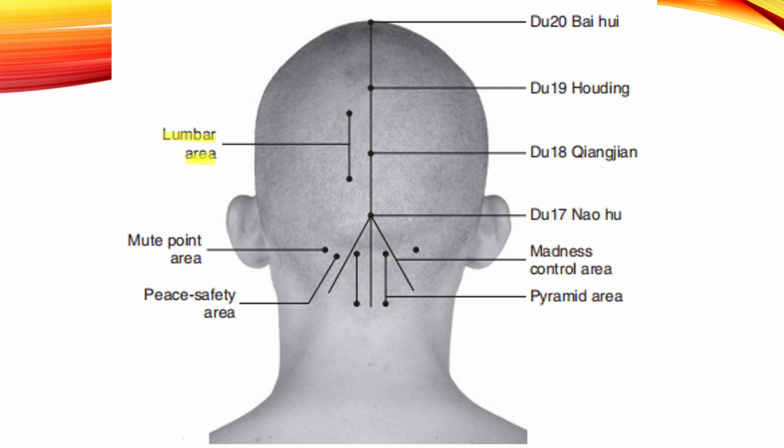Lumbar Area. Location: 1.5 cm lateral and parallel to the anterior-posterior midline, 4 cm above the external occipital protuberance, extending 4 cm superiorly. Indication: Low back pain.